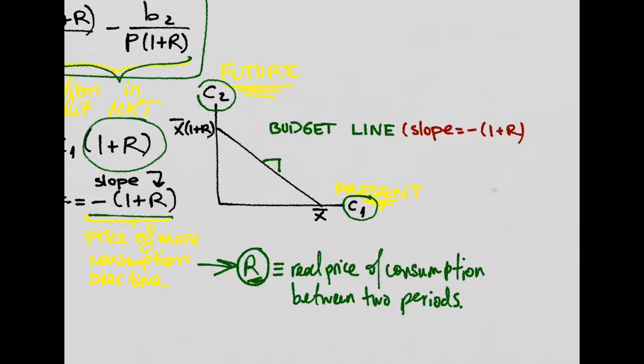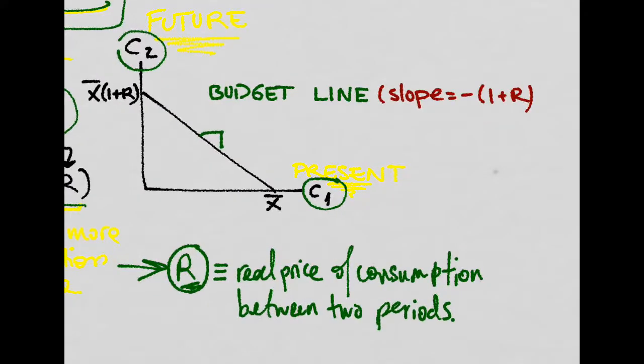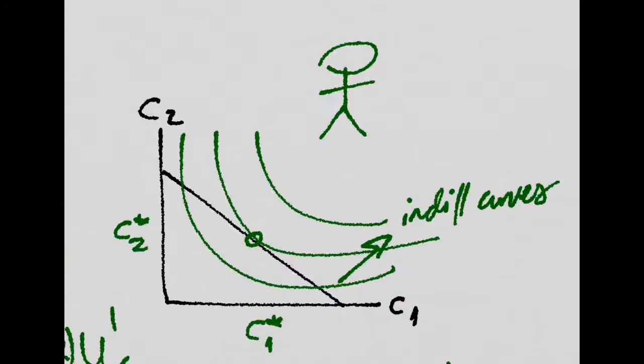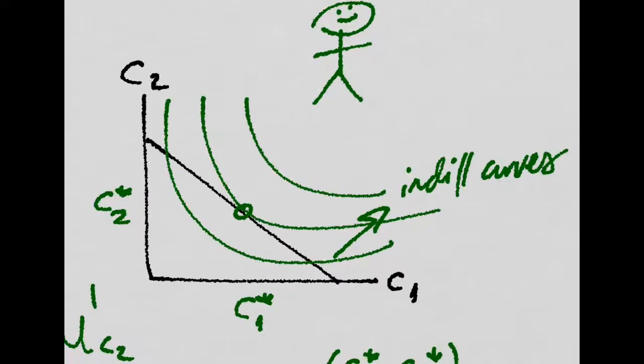So really we see that this slope is the price of more consumption over time. That is because the real interest rate is the real price of consumption between two periods. But remember,